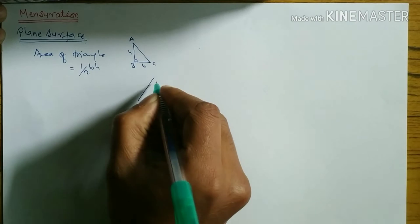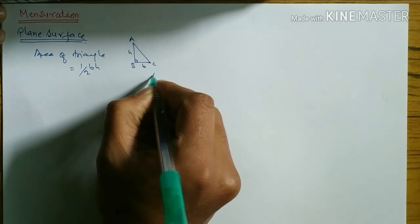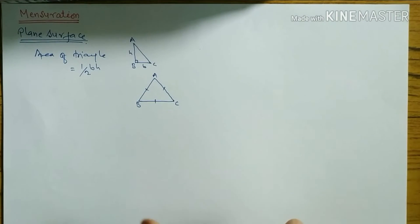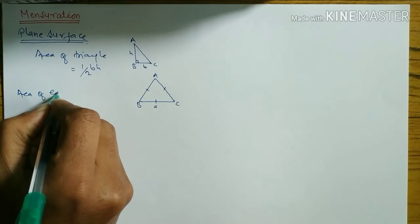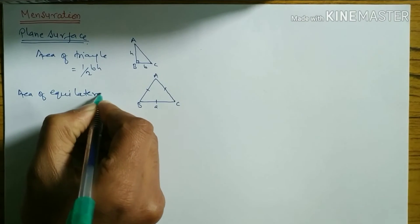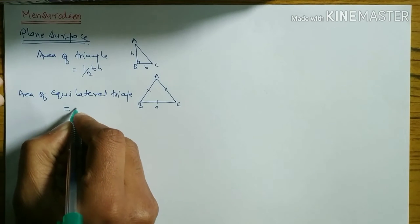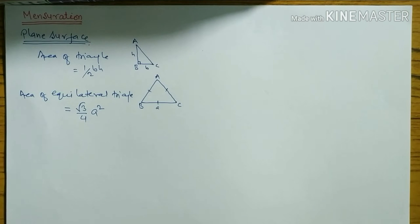Similarly, when the triangle is equilateral — meaning all sides are equal — the formula for area of equilateral triangle is: root 3 by 4 × a².